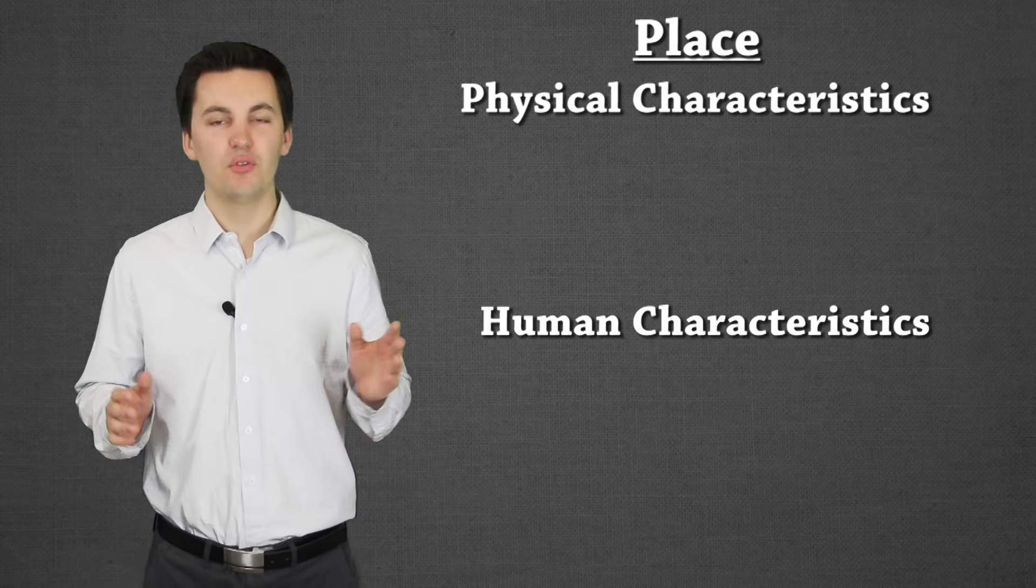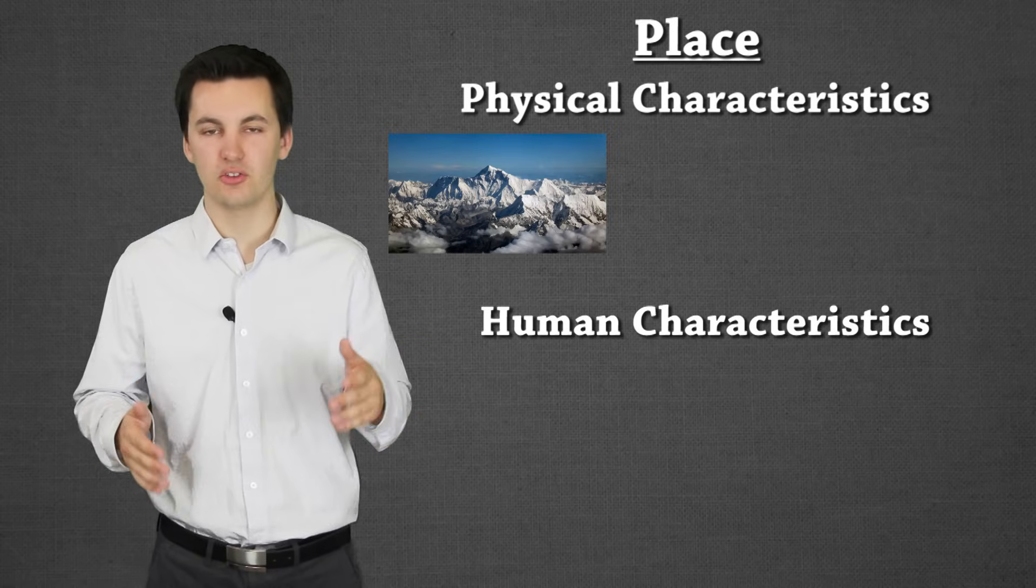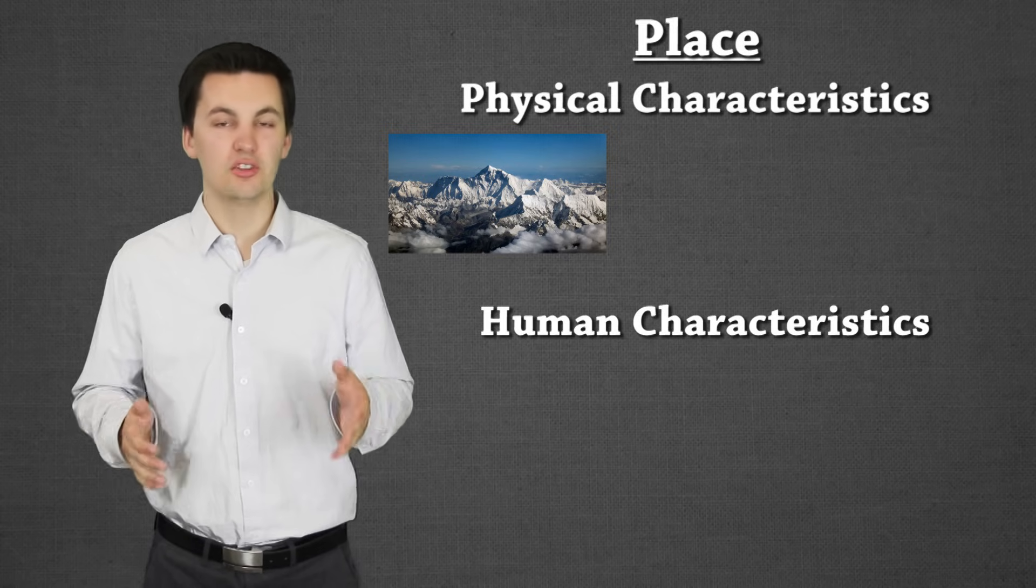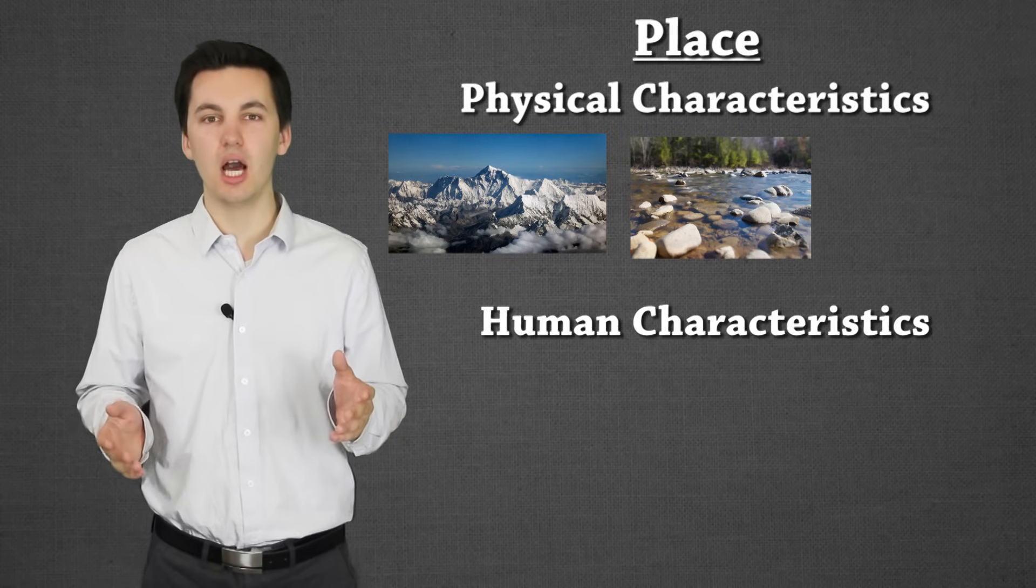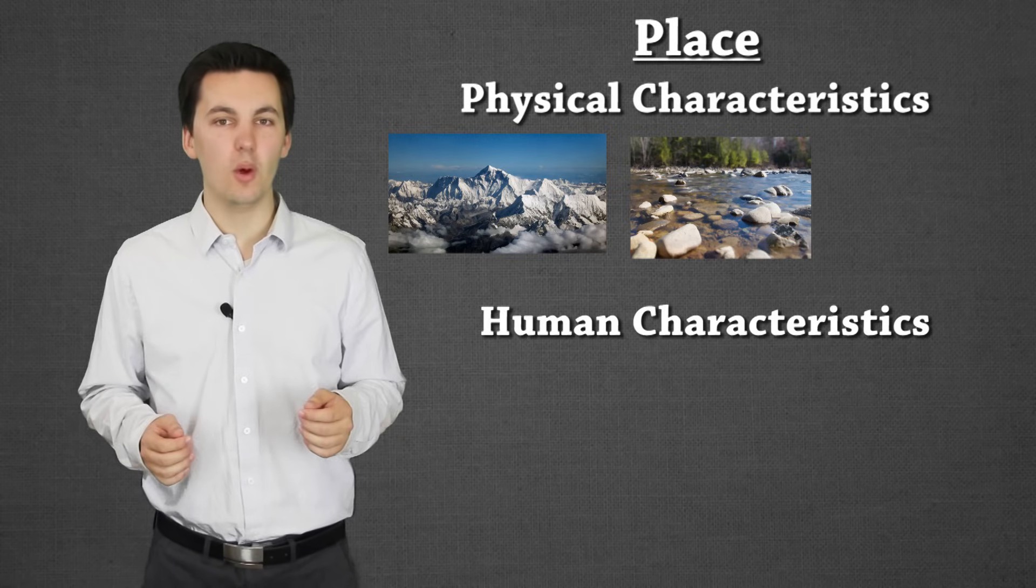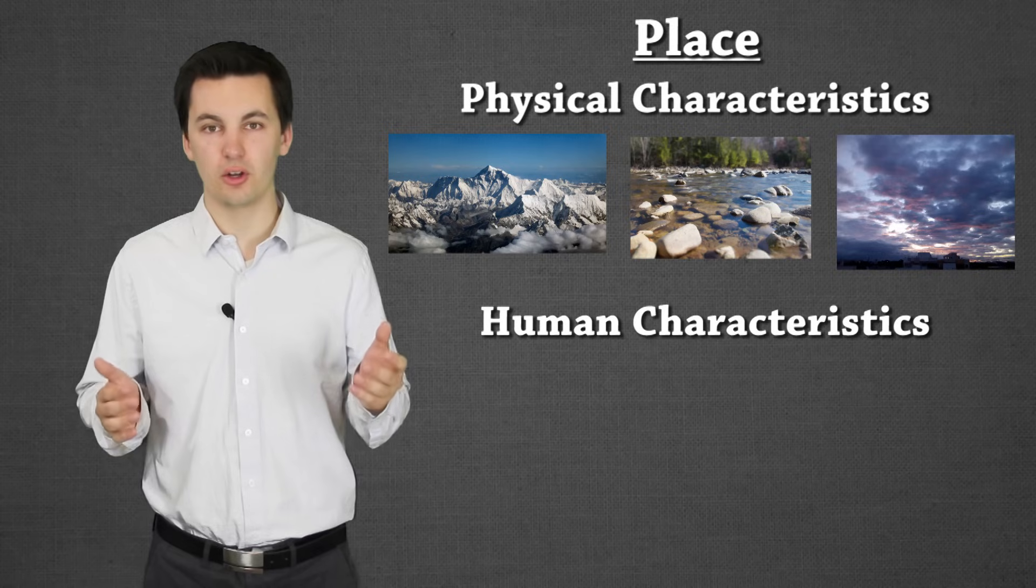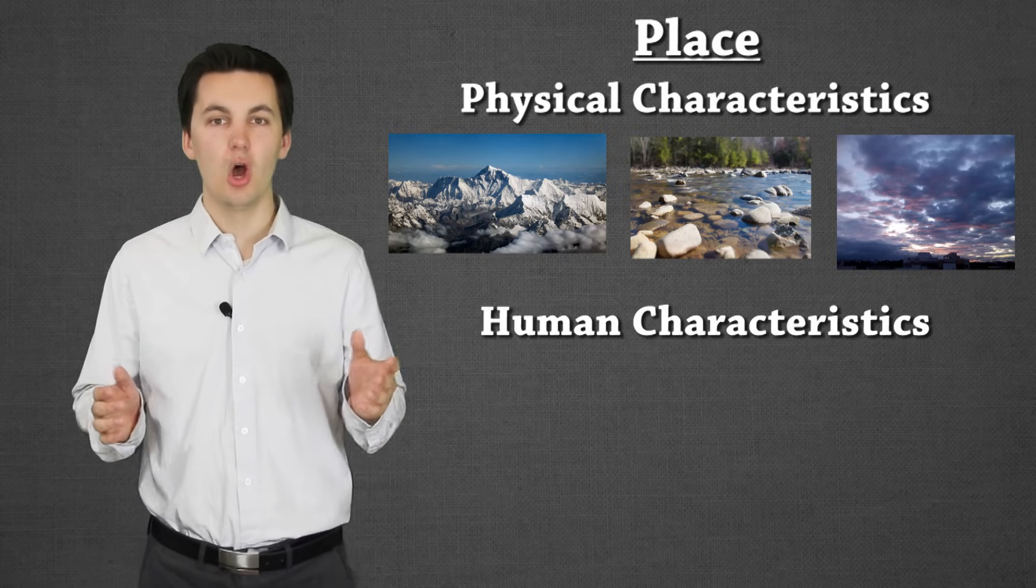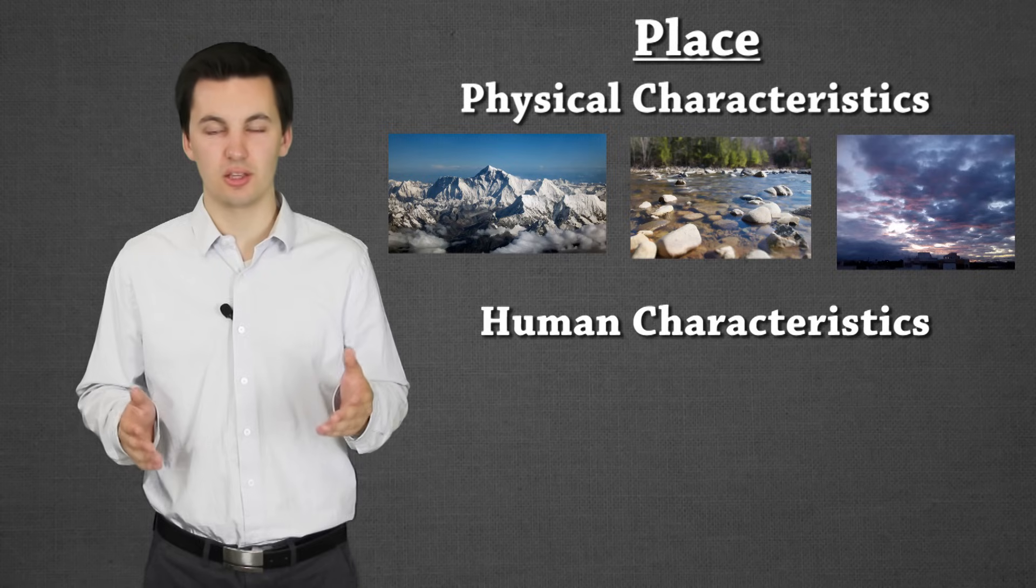Our last theme of geography is place. And we can break it into physical characteristics and human characteristics. Physical characteristics are as simple as what does the area look like? Is there mountains? Is it flat? Is there a prairie? Do we have bluffs? Is there a river or ocean next to it? Is it a tropical area? Is it a tundra? What's going on? It can also be described with weather patterns. Is it normally rainy or sunny? Is it always cloudy? Does that place experience tornadoes and hurricanes and big events? All of these would be examples of physical characteristics that would make a place unique. We can use these to describe a certain place and location.